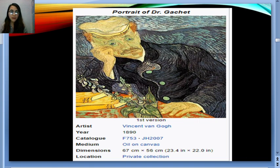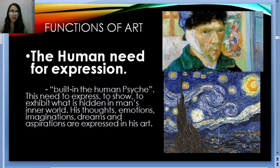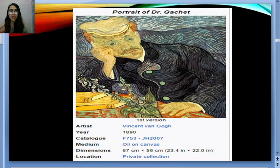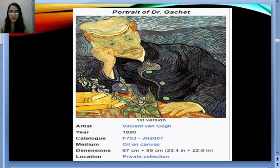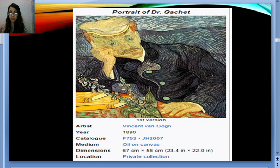Portrait of Dr. Gachet is still connected to the human need for expression. The person Van Gogh painted — Dr. Gachet — was one of his favorite persons in life. This painting, the first version from 1890, was made with oil on canvas. Its current location is in a private collection, so it's not displayed publicly.